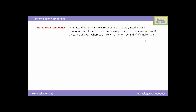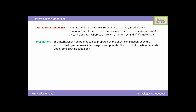Interhalogen compounds can be prepared by direct combination of two halogens, or by the action of a halogen on a lower interhalogen compound. The product formed depends upon specific conditions.